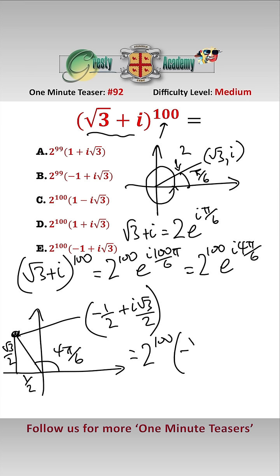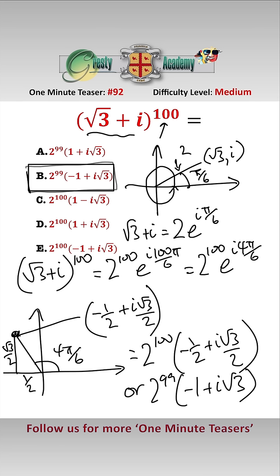So our answer is equal to 2^100(-1/2 + i√3/2), or 2^99(-1 + i√3), which is answer B.